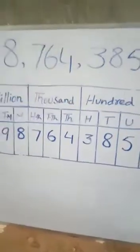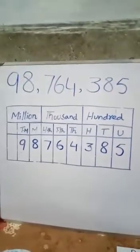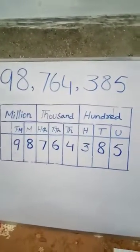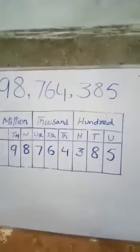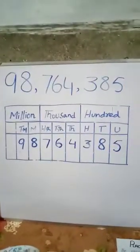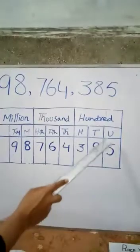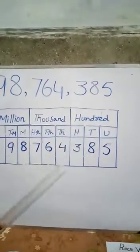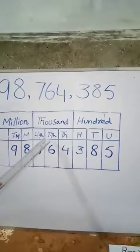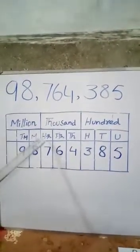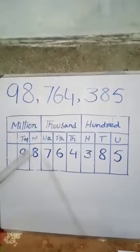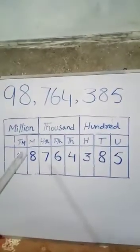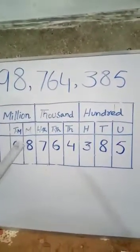Now let's see. We have this question. We will put the question in the correct place value. Let's see the correct place value of 8 digit numbers: 5 in units, 8 in tens, 3 in hundreds, 4 in thousands, 6 in ten thousands, 7 in hundred thousands, 8 in million, and 9 in ten million.